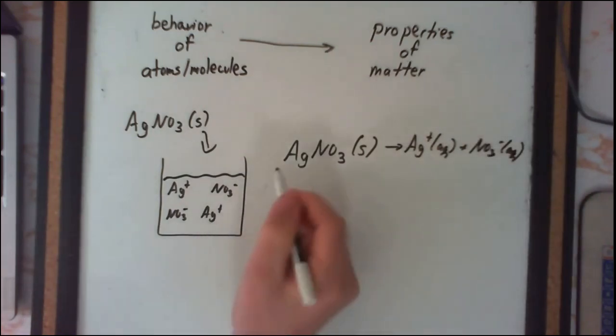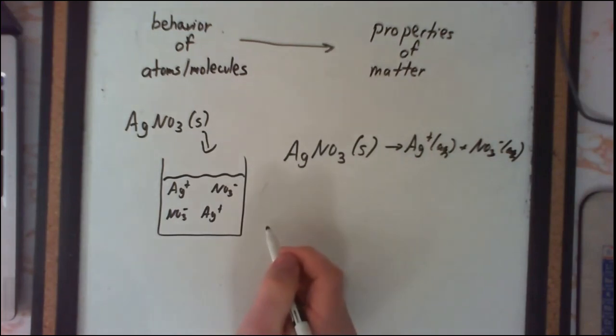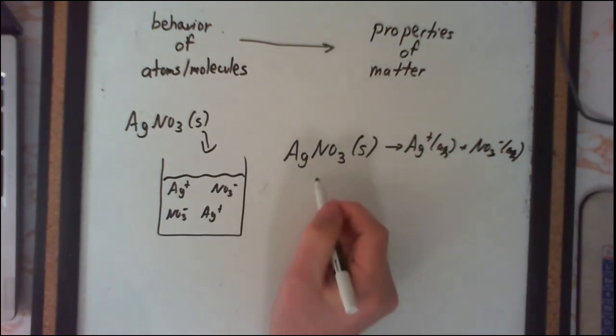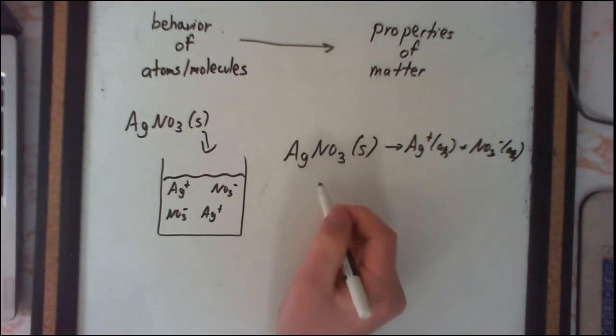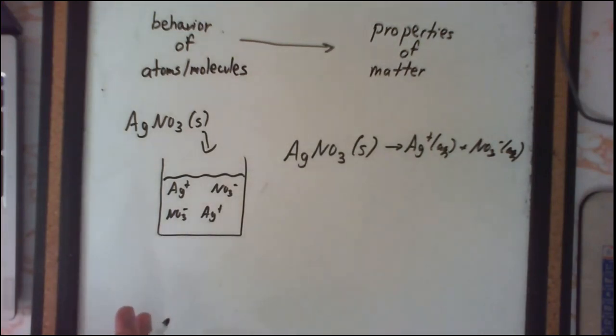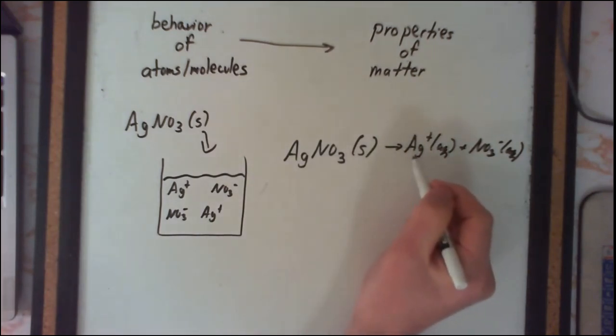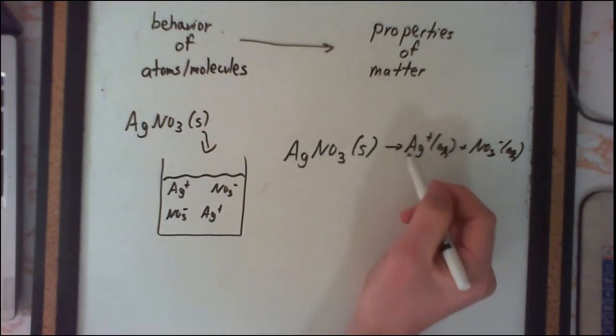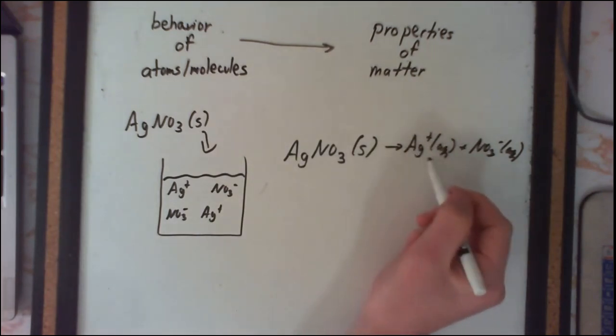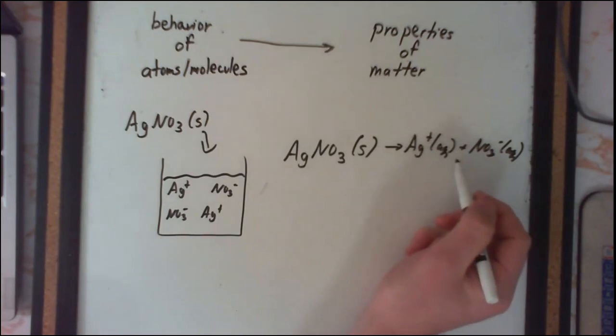What's true for sodium chloride and silver nitrate is true for all soluble ionic compounds: according to our model and experimental data, they break up into their individual ions.